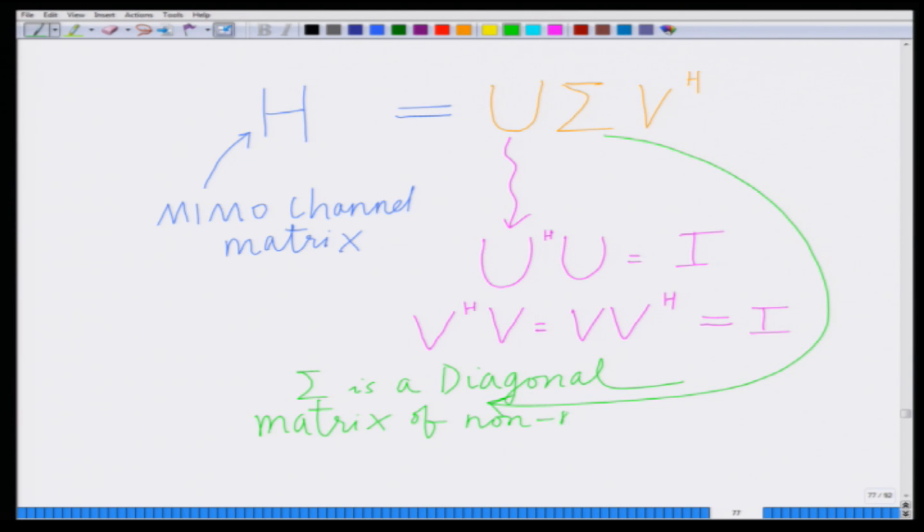The channel matrix H can be decomposed as H = UΣV†, where U and V are unitary matrices, and Σ is a diagonal matrix of non-negative singular values σ₁, σ₂, up to σ_T, arranged in decreasing (descending) order. That is what is meant by singular value decomposition.